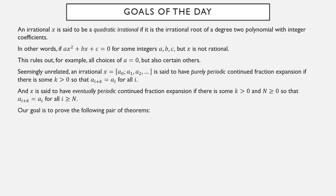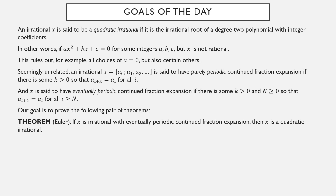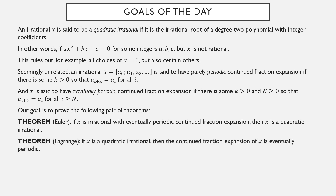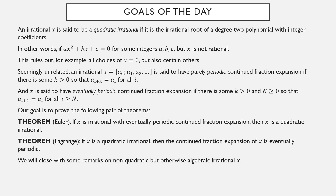Our goal is to prove two theorems. The first, due to Euler: if x is irrational with eventually periodic continued fraction expansion, then it is a quadratic irrational number. Then Lagrange proved the converse: if x is quadratic irrational, then the continued fraction expansion is eventually periodic. The first is significantly easier than the second, and we'll close the video with some remarks on non-quadratic but otherwise algebraic irrational numbers.